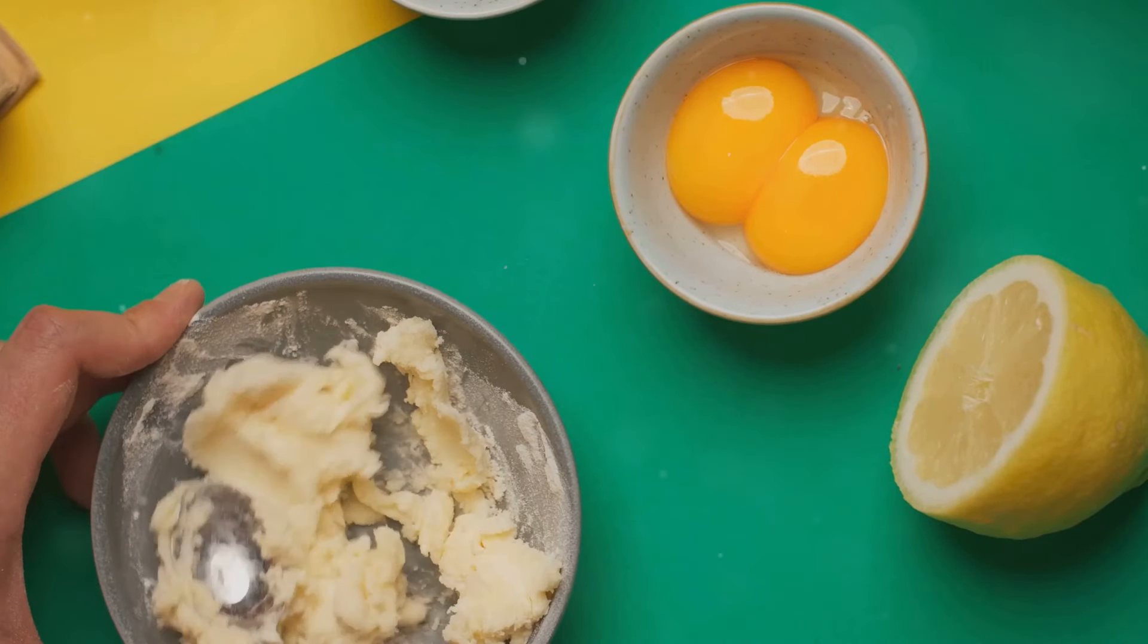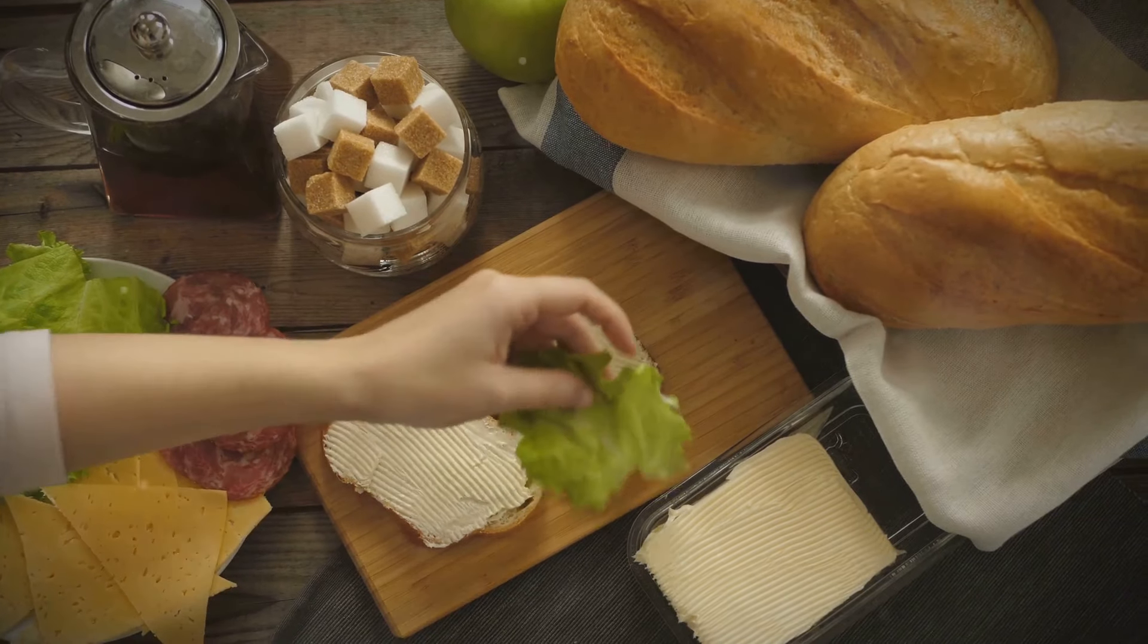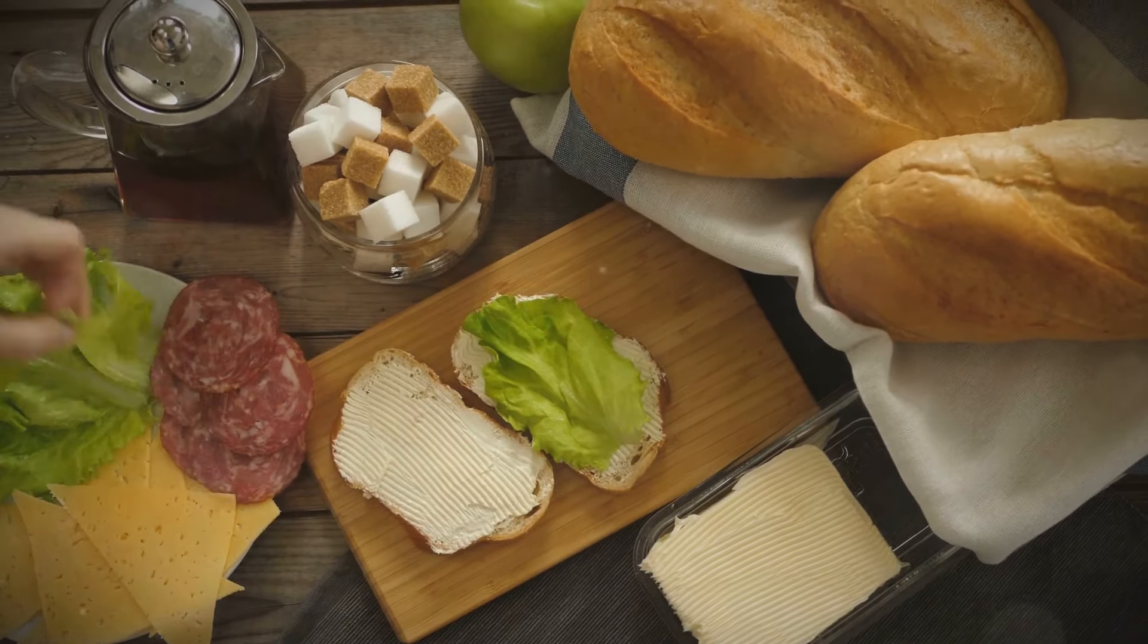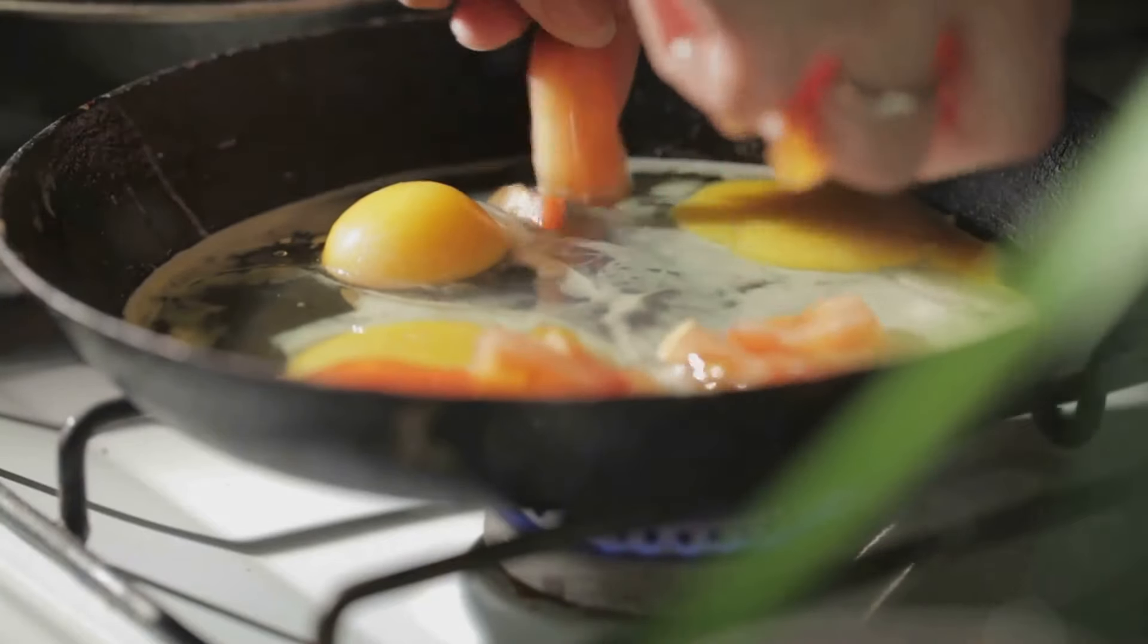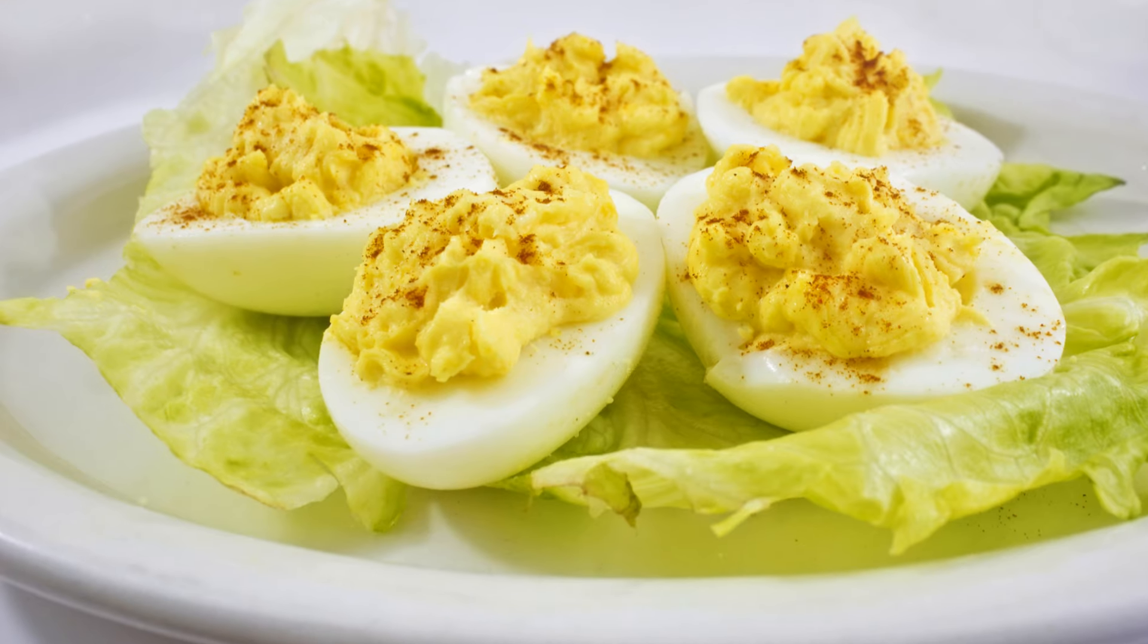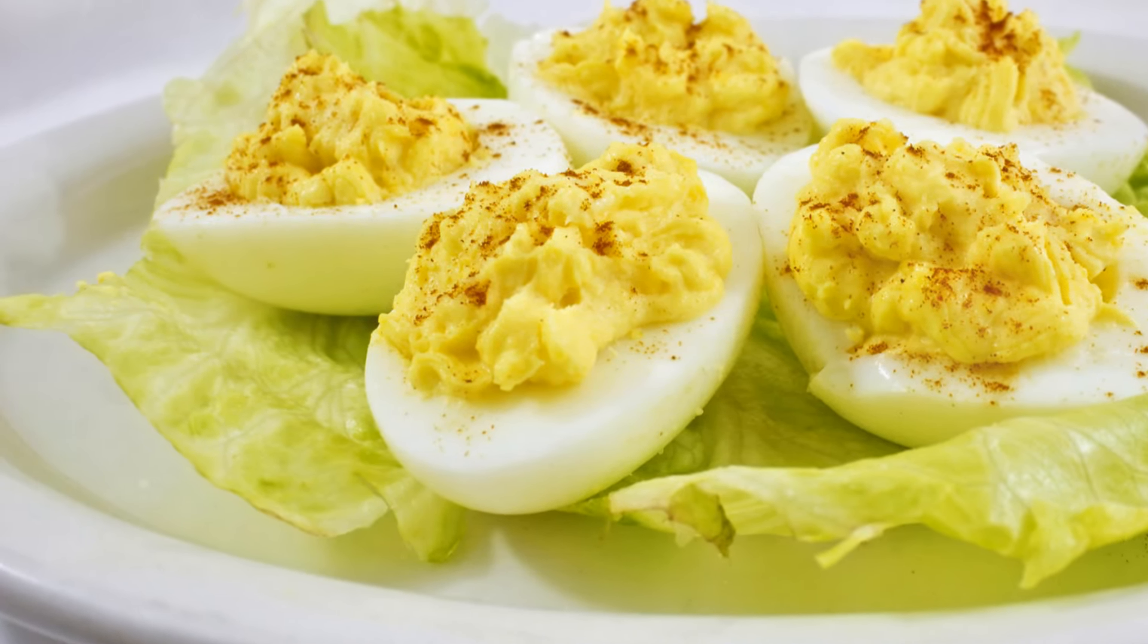In salads, add sliced eggs to your favorite salads for extra protein. In sandwiches, make a classic egg salad sandwich or add slices to your breakfast sandwich. As snacks, simply season with salt and pepper for a quick and healthy snack. And don't forget deviled eggs. Mix the yolks with mayonnaise and mustard for a delicious appetizer.